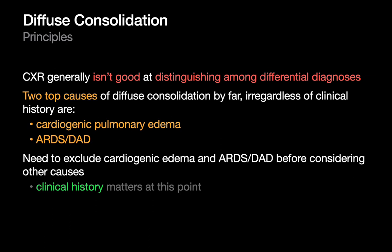Basic principles when interpreting diffuse consolidation on imaging: number one, chest X-rays just aren't that good. If you showed radiologists diffuse consolidation blinded by patient history, even the best radiologists are not going to be specific in figuring out the cause. However, we need to know the horses and the zebras. The two most likely explanations of diffuse consolidation by far are CHF — cardiogenic pulmonary edema — and ARDS, diffuse alveolar damage.